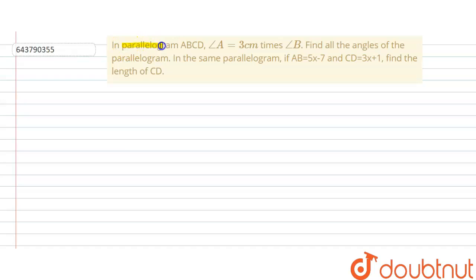Hello student, the problem is: in parallelogram ABCD, angle A is equal to three times angle B. Find all the angles of the parallelogram. In the same parallelogram, if AB is equal to 5x minus 7 and CD equals 3x plus 1, find the length of CD.